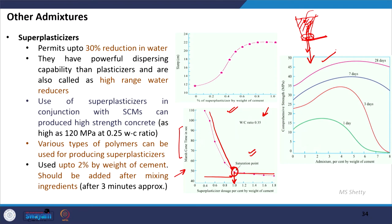Another variation shows how compressive strength varies at different days with the addition of these agents. Looking at the 28-day graph: with 1 percent admixture the strength is at a certain level; it gradually increases with increasing admixture percentage, but after a particular point a decrease is seen. So the superplasticizer dosage must be selected carefully to avoid adversely affecting compressive strength of the final concrete mix.